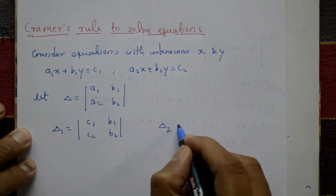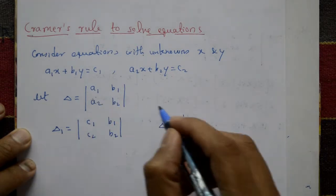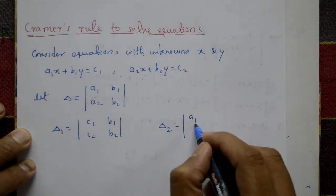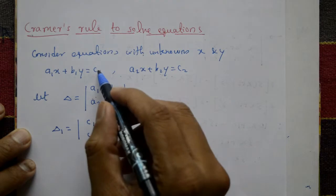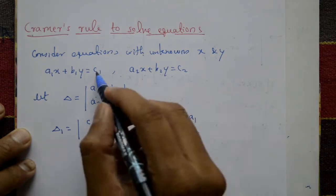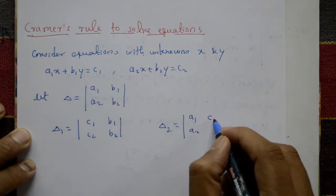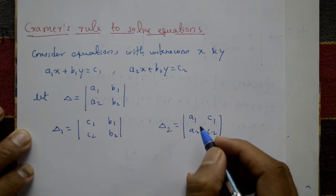And delta 2 is formed by keeping the first column the same as a1 and a2, and replacing the second column (b1, b2) with the right-hand side values c1 and c2.